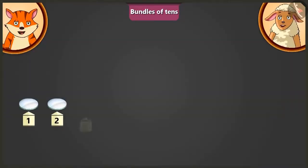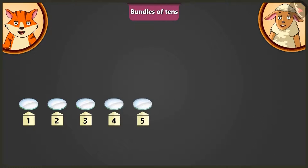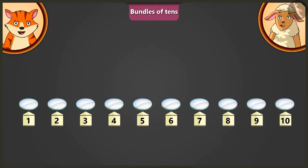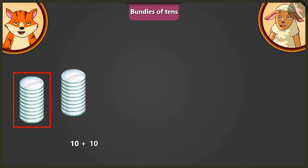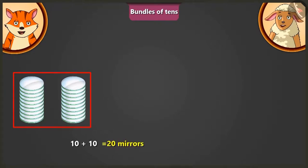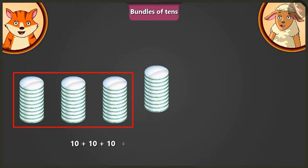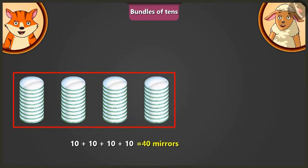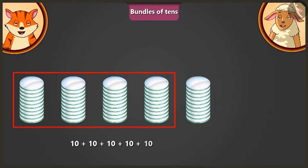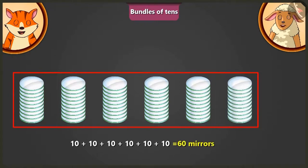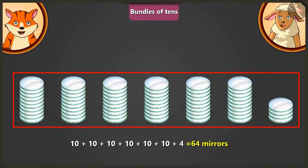Billy counts: one, two, three, four, five, six, seven, eight, nine, ten. Adding a ten and a second ten gives twenty. Adding another ten gives thirty. Another ten gives forty. Another ten gives fifty. Adding the remaining ten to fifty makes sixty. Adding four more mirrors to sixty makes sixty-four mirrors.